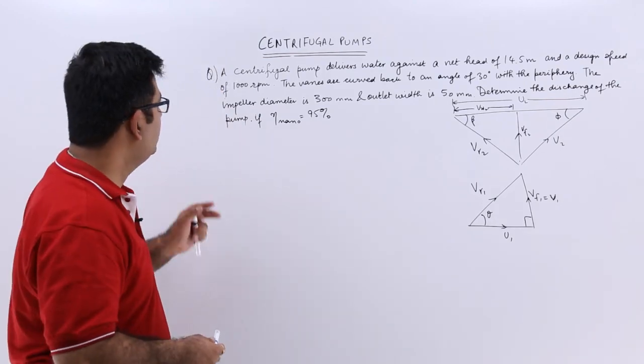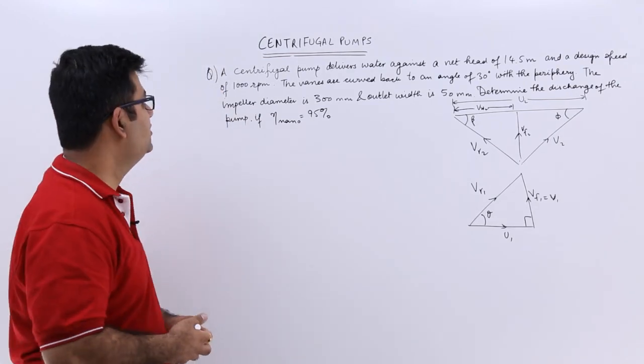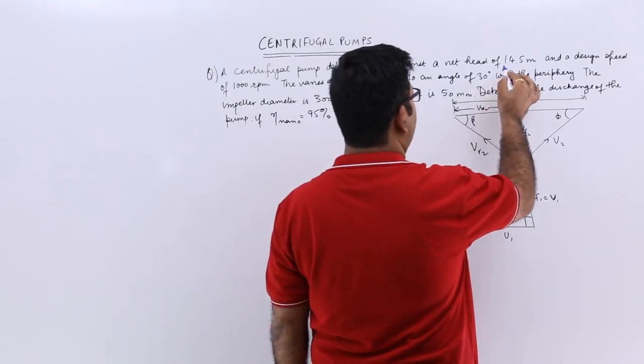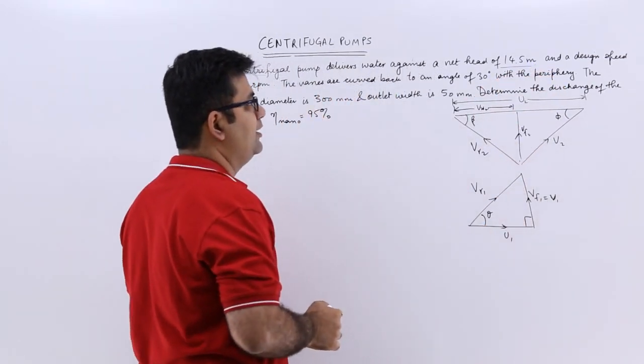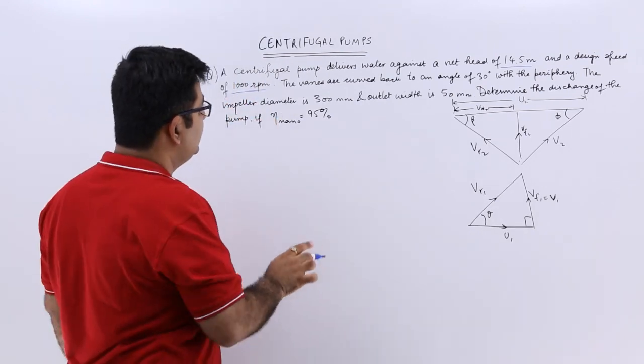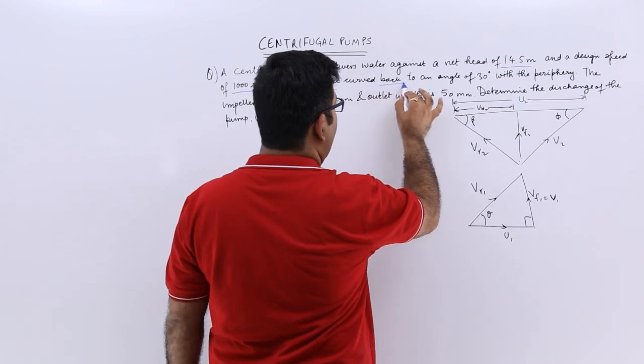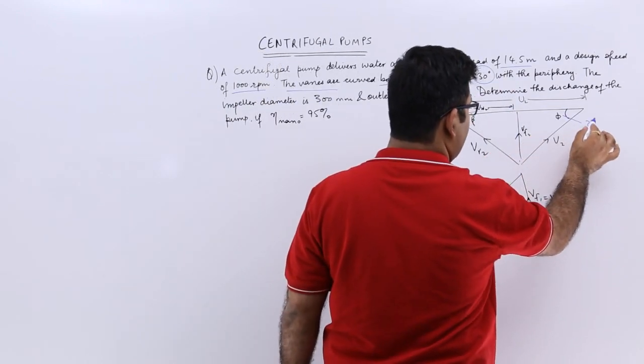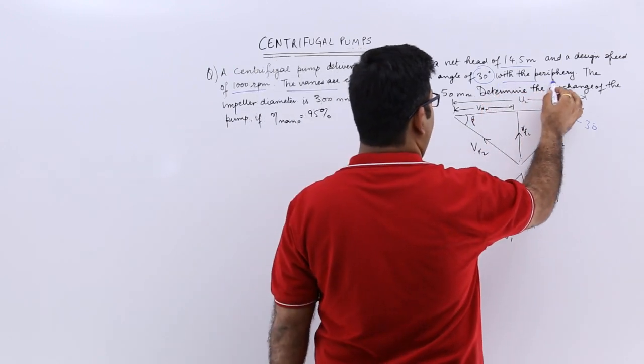Now let's talk about the second question on centrifugal pumps. The question says a centrifugal pump delivers water against a net head of 14.5 meters and a design speed of 1000 rpm. The vanes are curved back to an angle of 30 degrees. This means this phi is 30 degrees with the periphery.